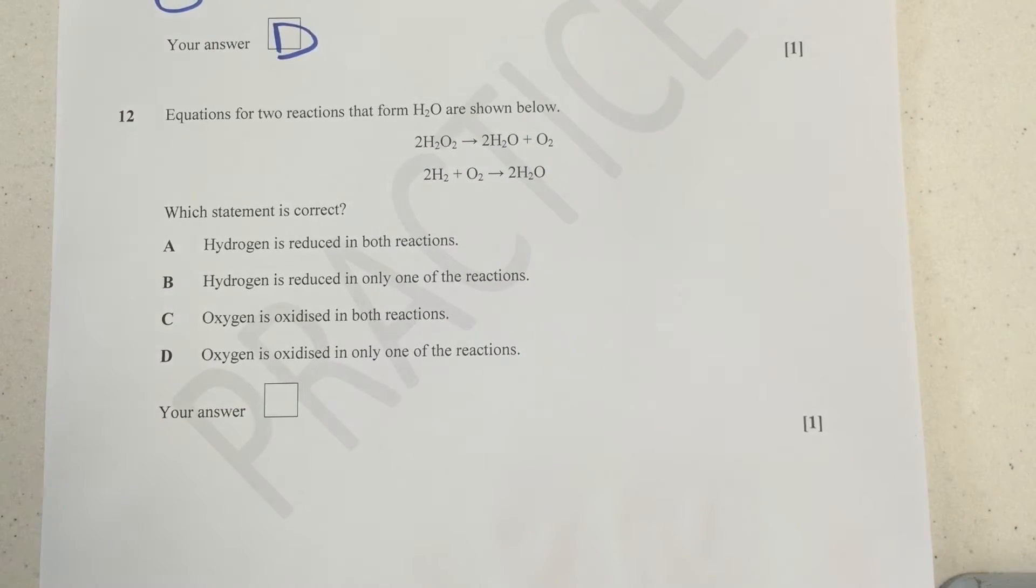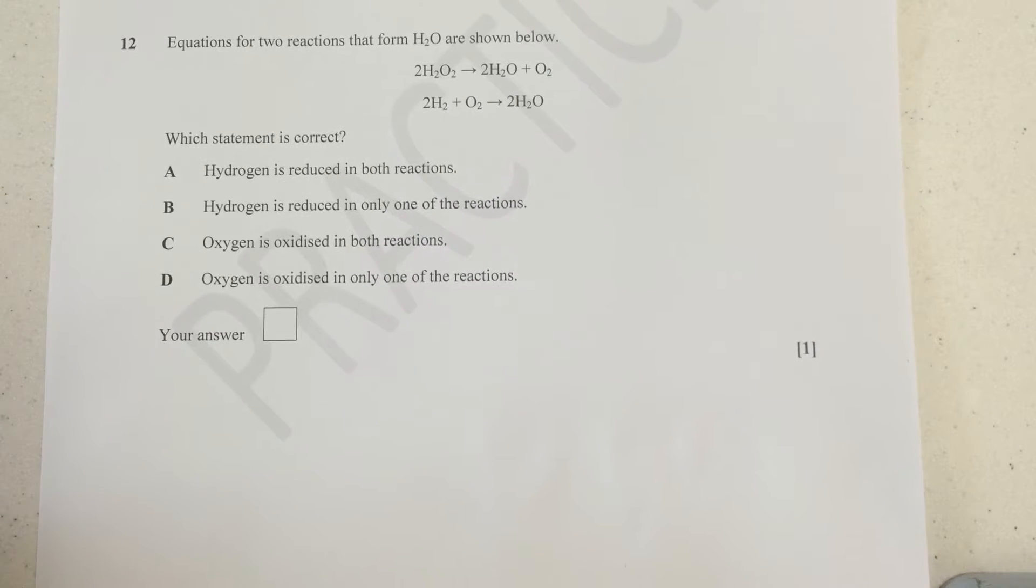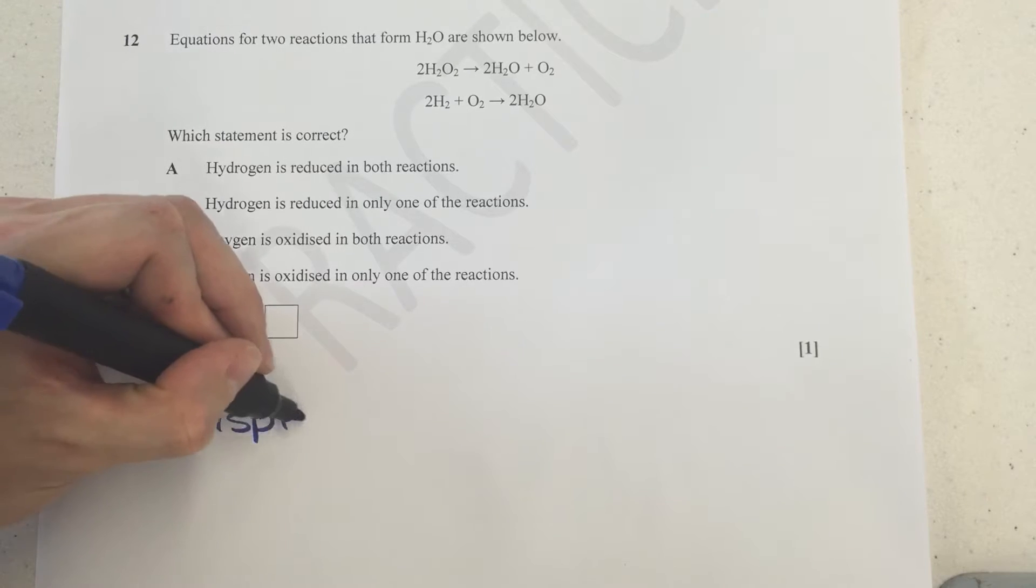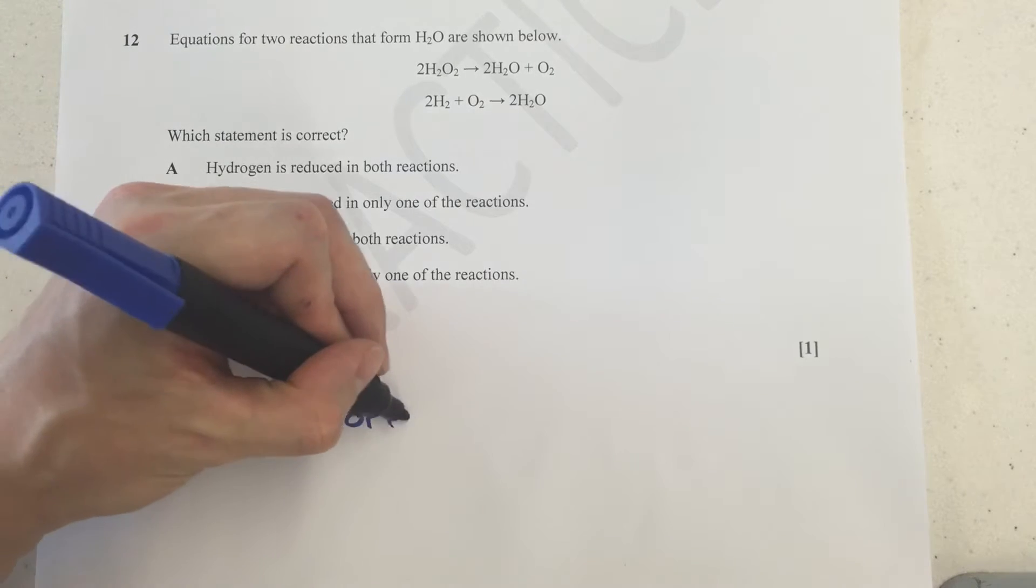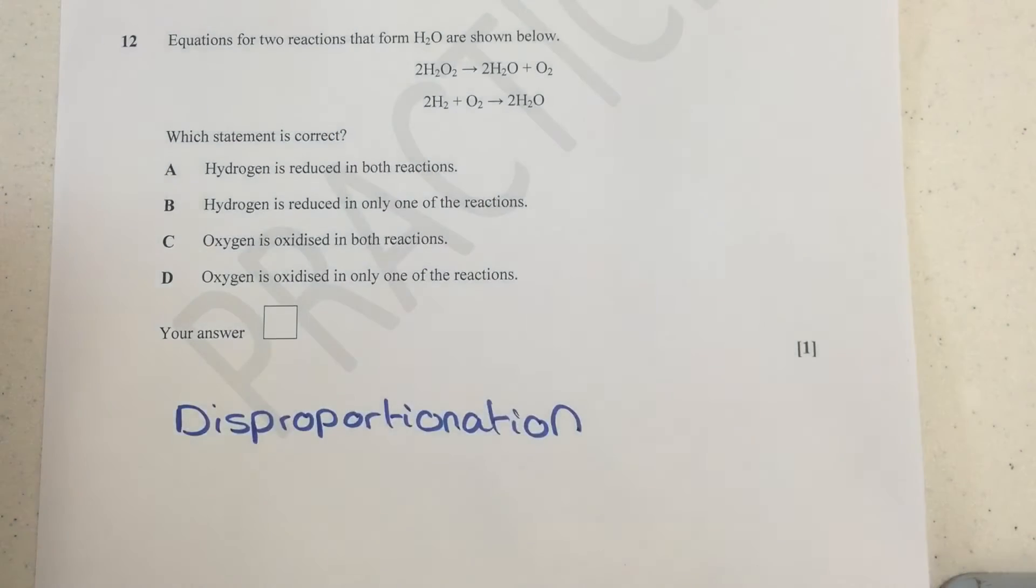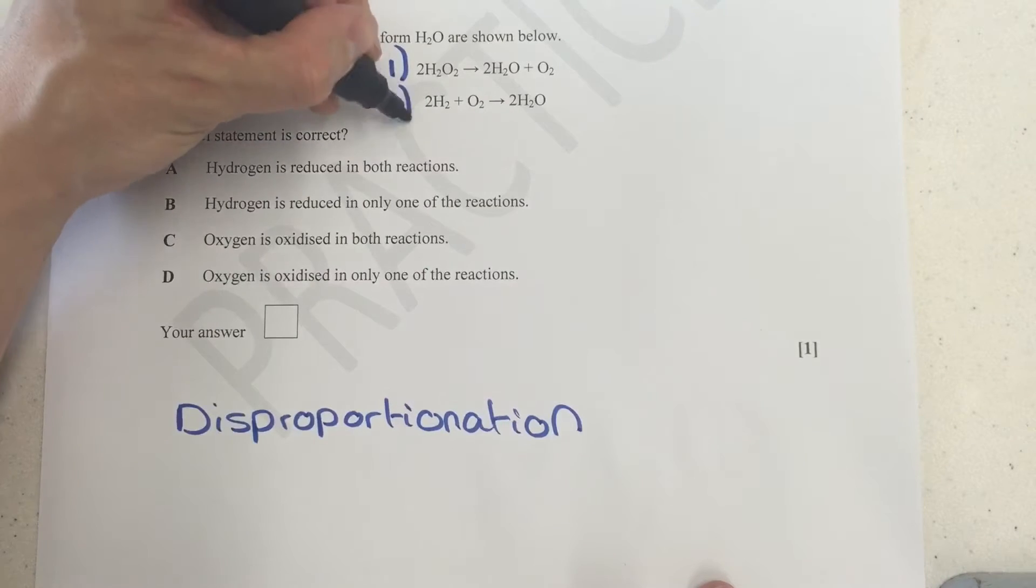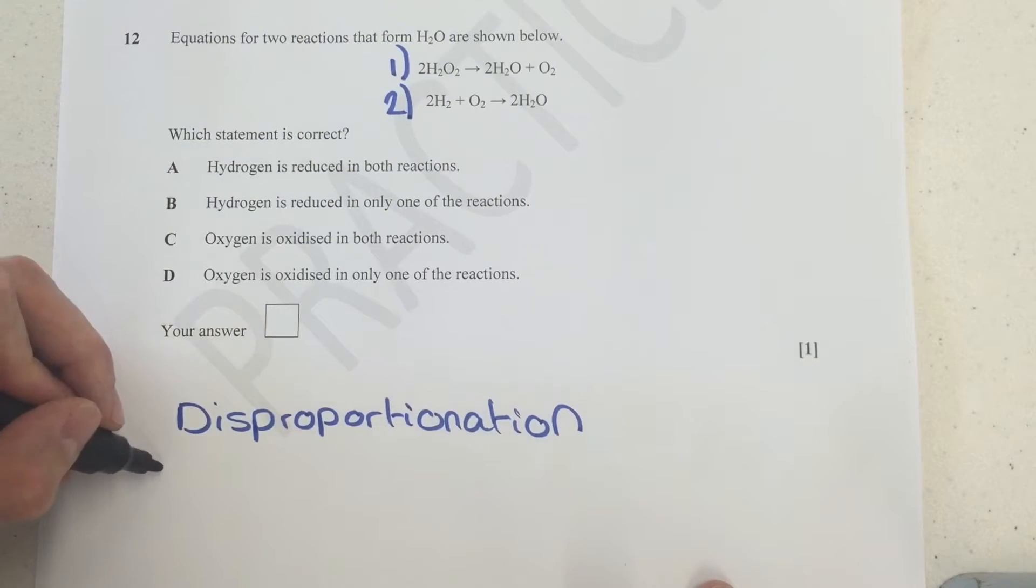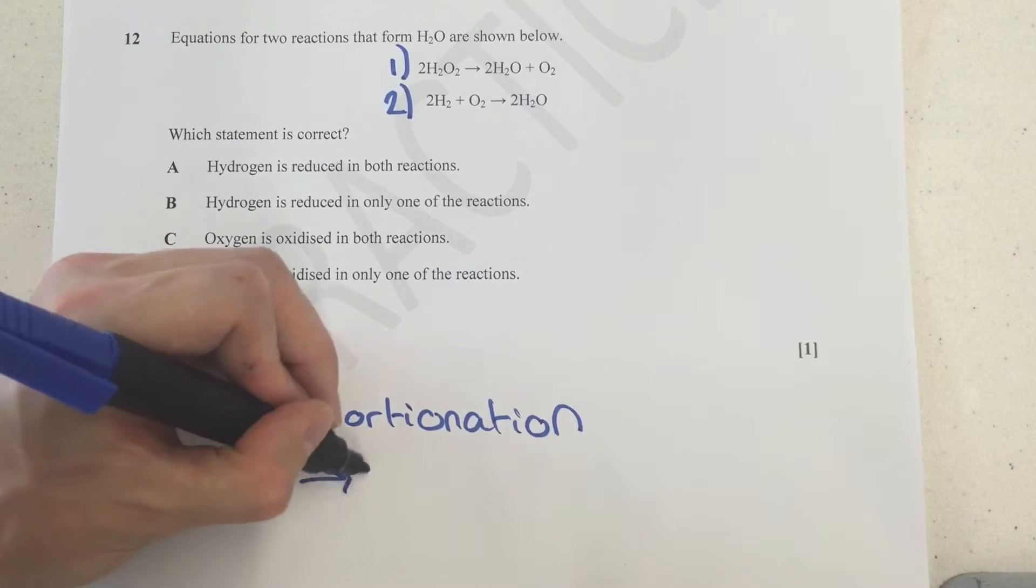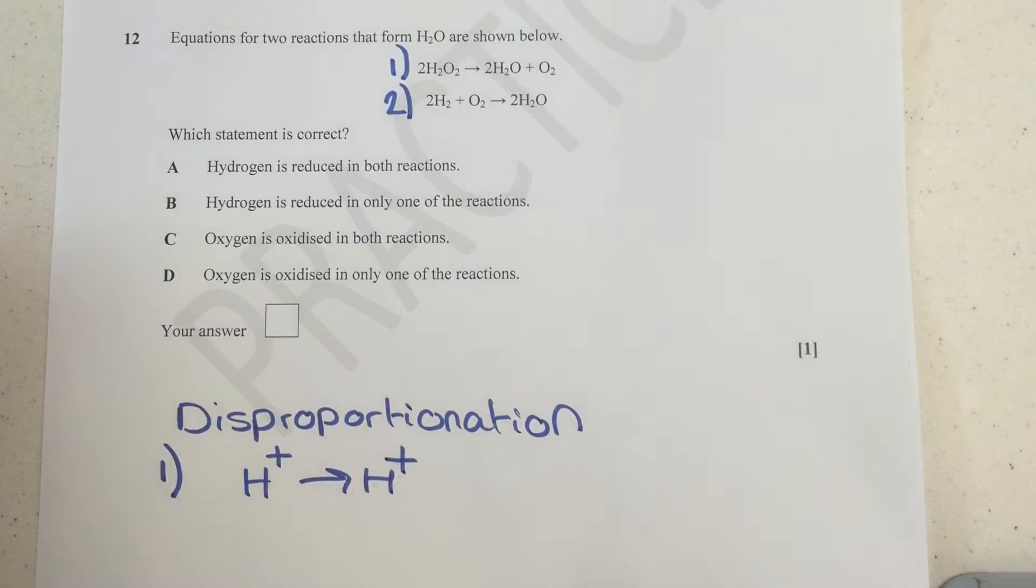Next one's just here. Now this is absolutely crucial because it's a really good example of some disproportionation. This is where an element is simultaneously oxidized and reduced in the same equation. The example of this, if I call these reactions one and two, is in reaction one. If you look closely at it, the H+ stays as H+ on either side of the reaction.